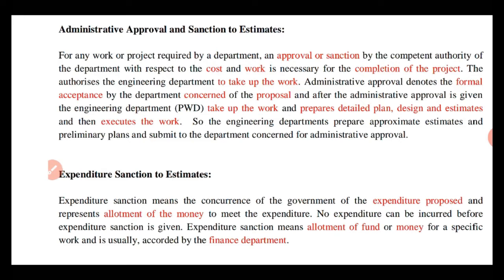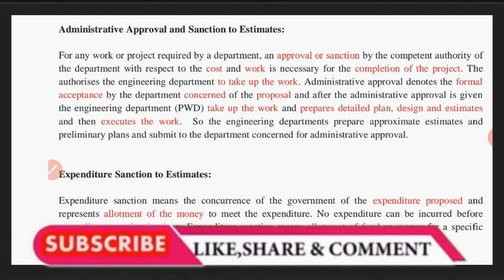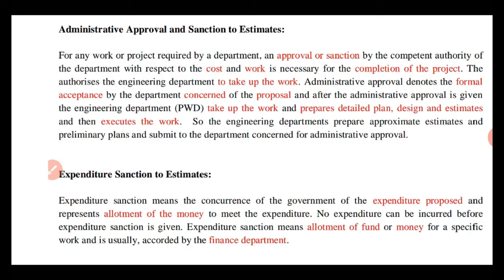किसी project को शुरू करने से पहले उसकी requirement और feasibility check करनी पड़ती है, और उसके लिए एक competent authority से approval या sanction लेना पड़ता है। वो competent authority government हो सकती है या private company का head भी हो सकती है।